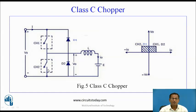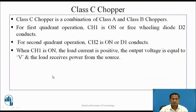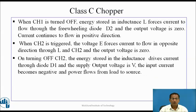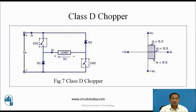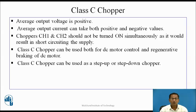When chopper switch 2 conducts, current flows through E, V, L, and chopper switch 2 — assume this direction of current is negative. On turning off chopper switch 2, the energy stored in inductance drives the current through diode D1, and the supply output voltage is V. The input current becomes negative and power flows from load to source. Average output voltage is positive and average output current can take both positive and negative values. Chopper switches CH1 and CH2 should not be turned on simultaneously as it would result in short circuiting the supply. Class C chopper can be used both for DC motor control and regenerative braking of DC motor, and can be used as a step-up or step-down chopper.